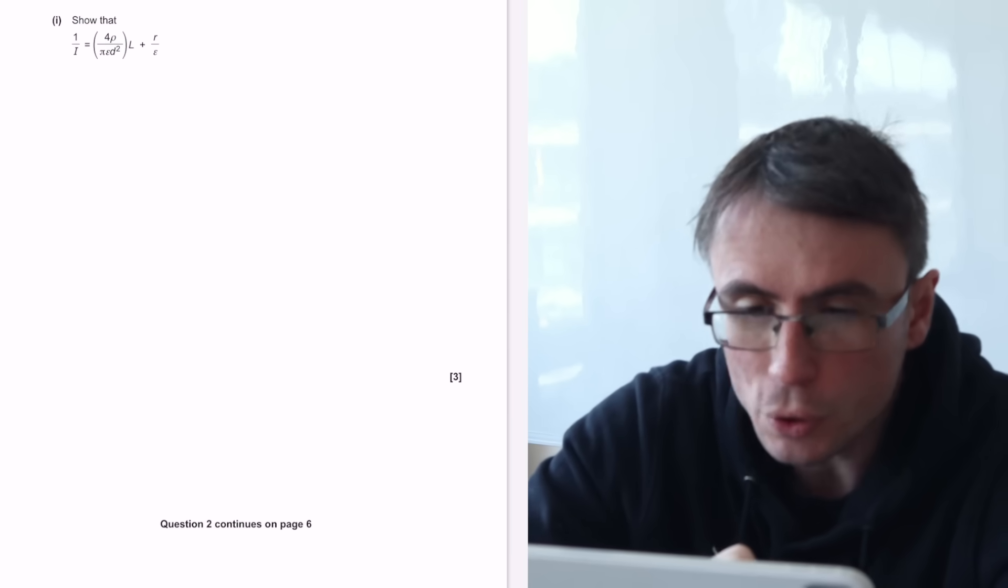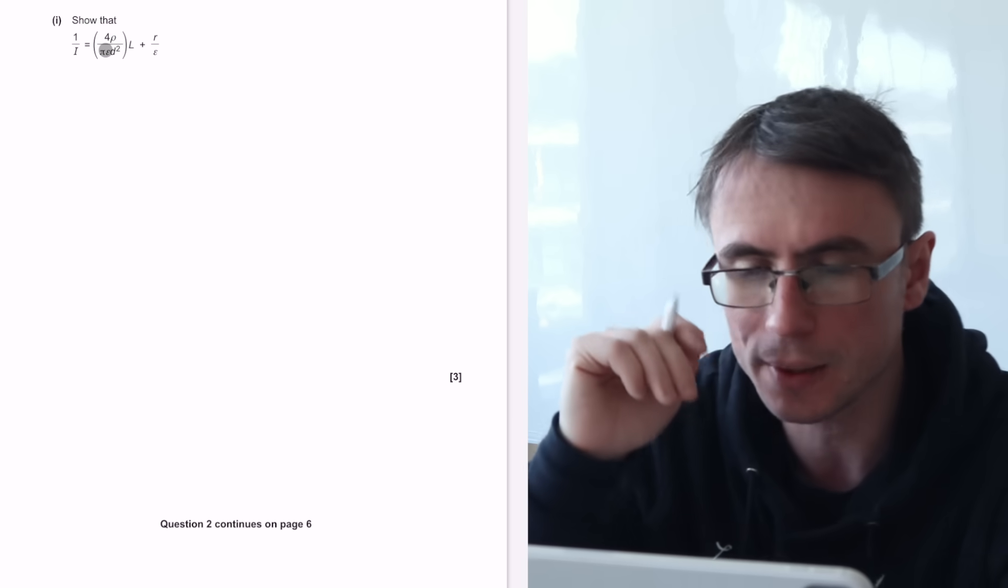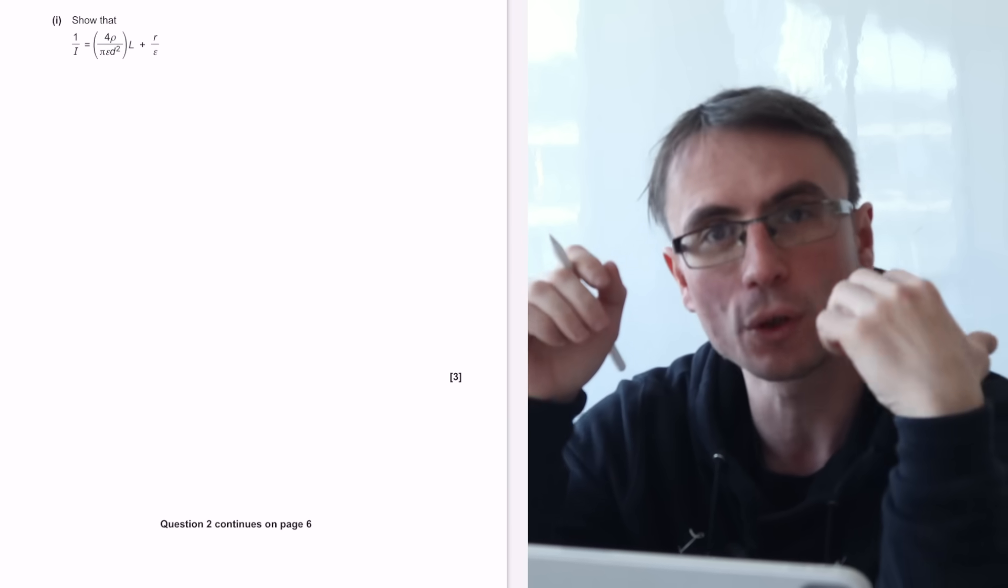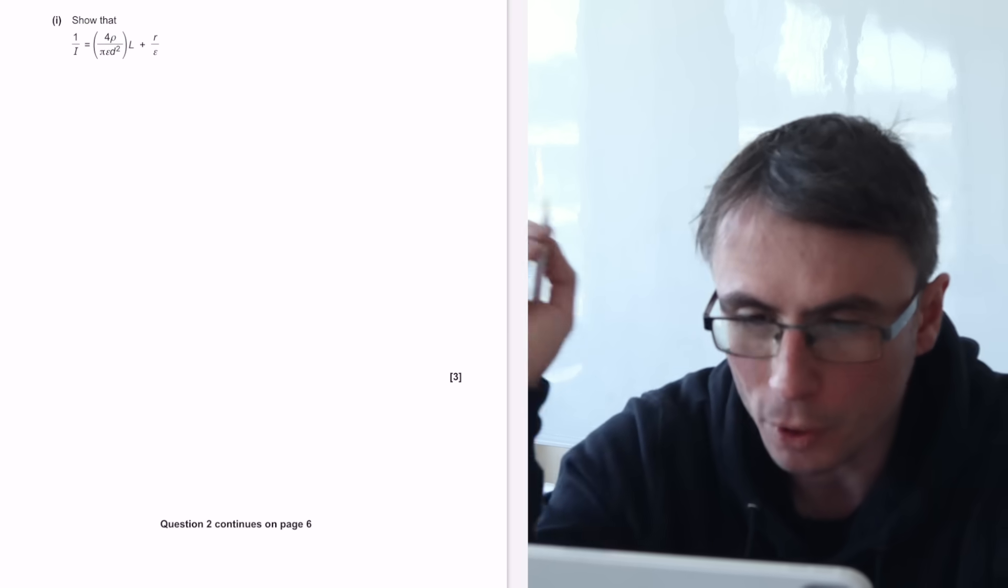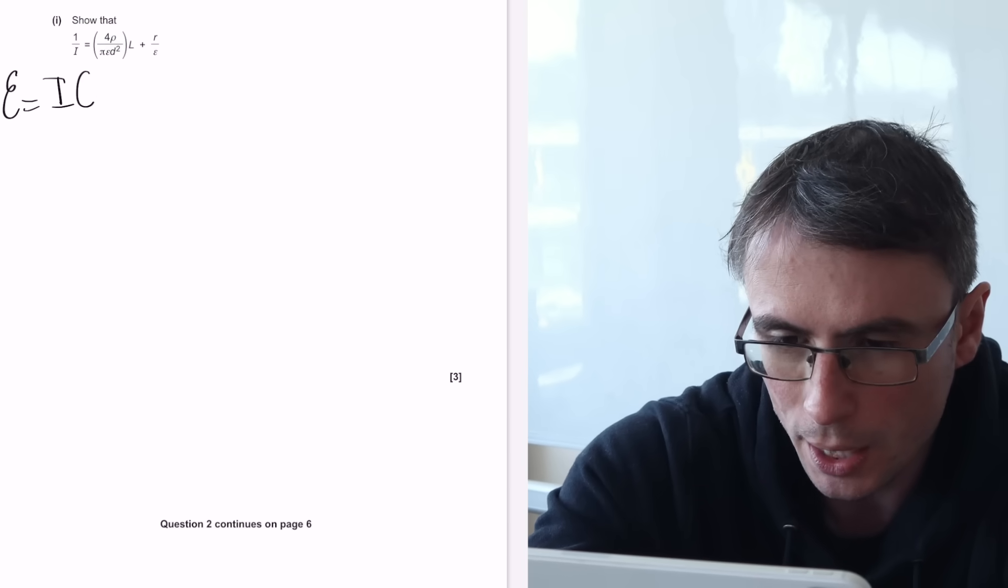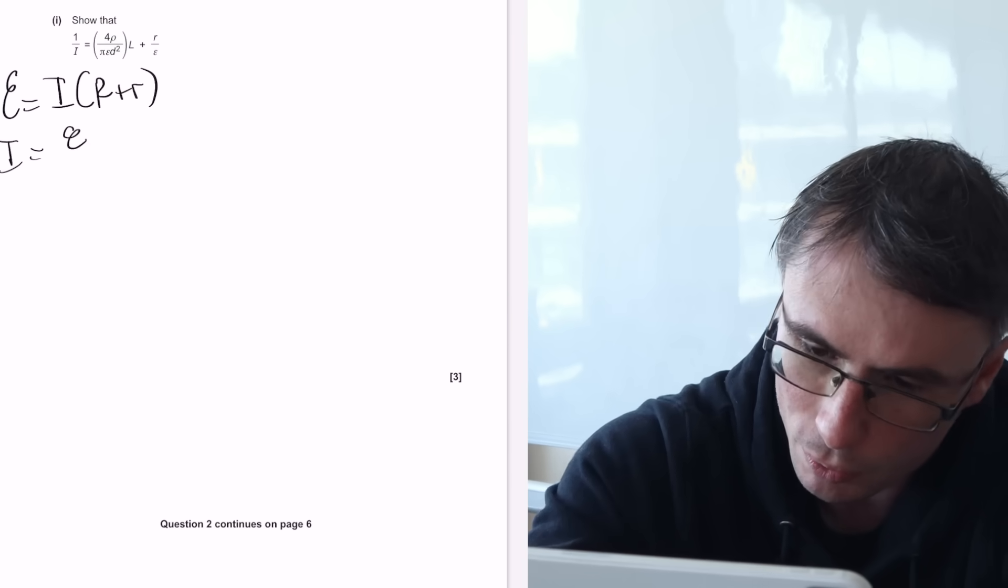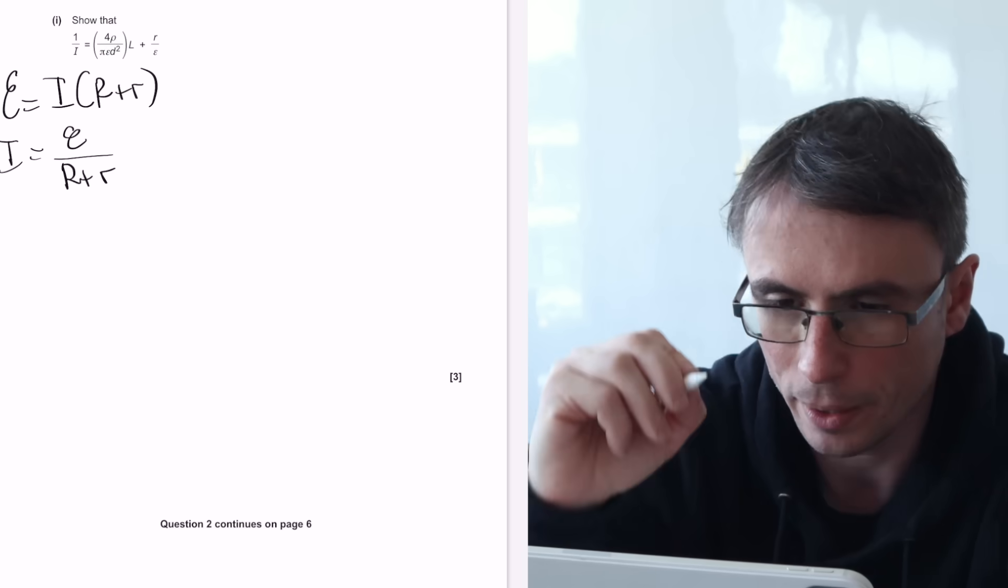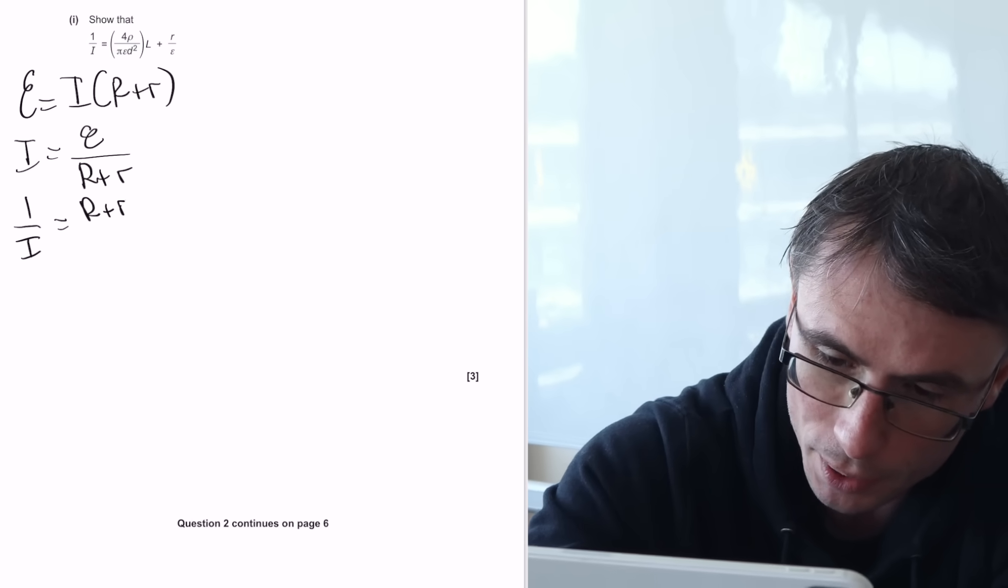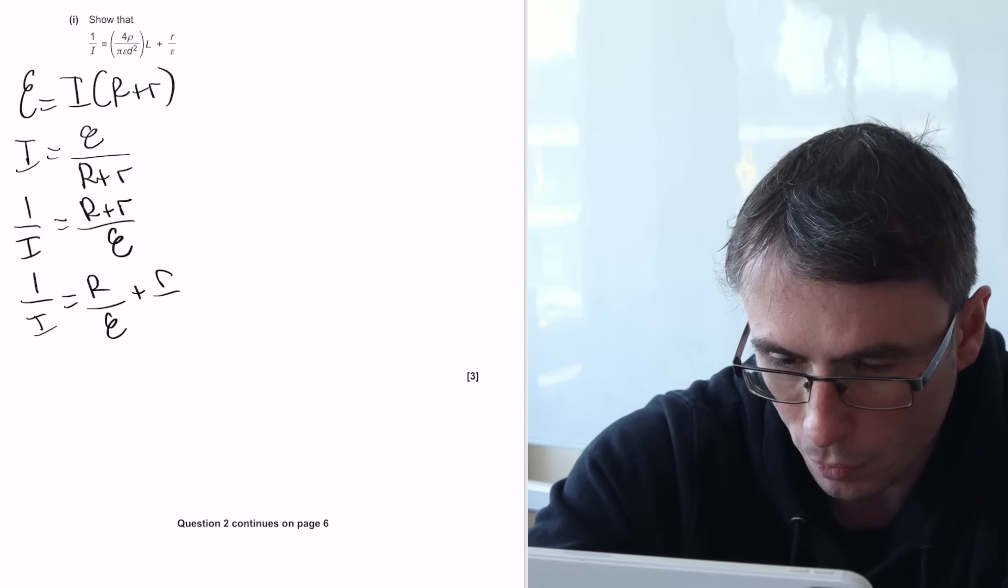This here is a show question. So the student varies the length of the wire in the circuit, records the current I using the ammeter. Show that this is actually true. When we're looking at show questions, we want to include all equal signs and have a clear logical format of our working. So I'm going to start off with the equation that the EMF is going to be equal to I, then external plus internal resistance. Let's rearrange this for the current, which is going to be equal to the EMF divided by R plus r. Because on the left-hand side we have 1 over I, I'm just going to flip everything. So I'm going to get 1 over I is going to be equal to R plus r divided by the EMF. 1 over I will then be equal to R over the EMF plus r over the EMF.